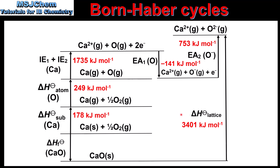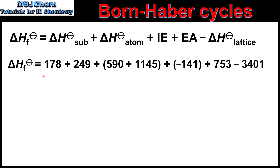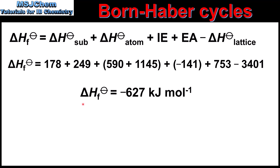So next we will use these values to calculate the enthalpy of formation of calcium oxide. Here we have the equation to calculate the enthalpy of formation, and here we have the equation together with the values. This gives us an enthalpy change of formation for calcium oxide of minus 627 kilojoules per mole.